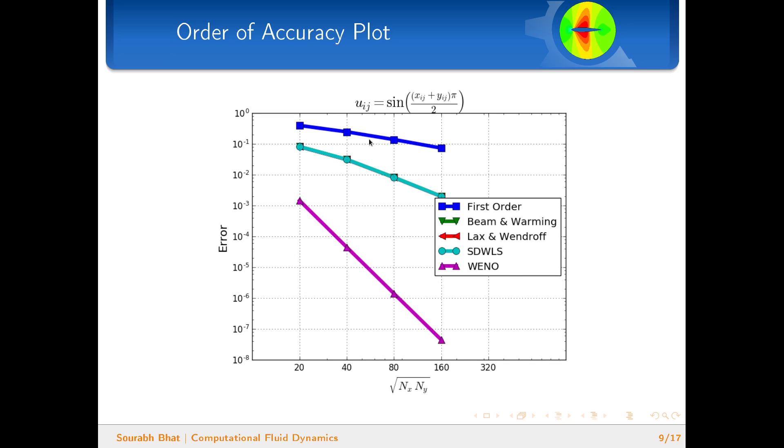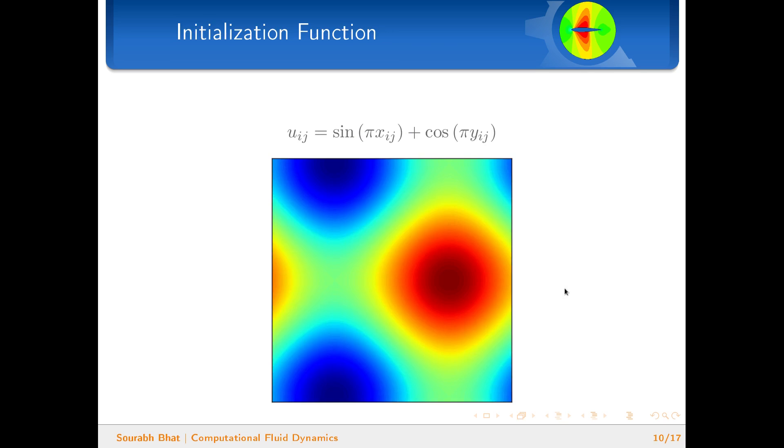This should be basically a 45-degree line—it is not here because it is stretched in this particular direction. Now the second function that I have used for initialization is this function, which is slightly more complicated compared to the previous one.